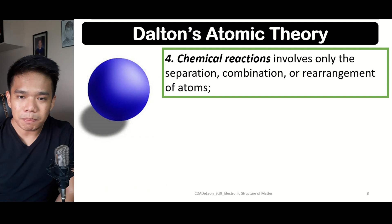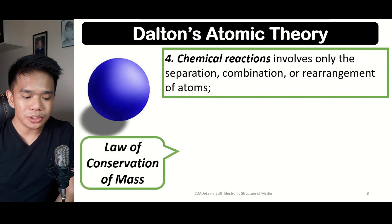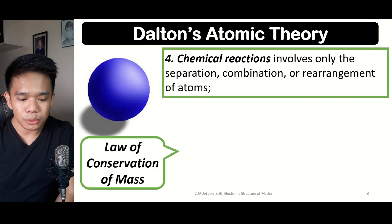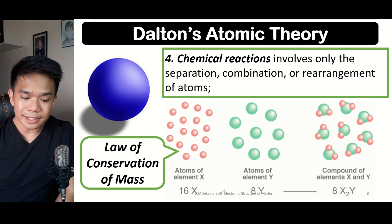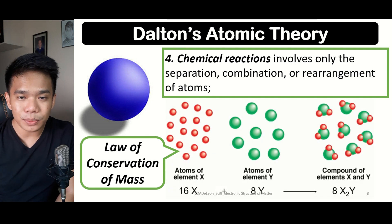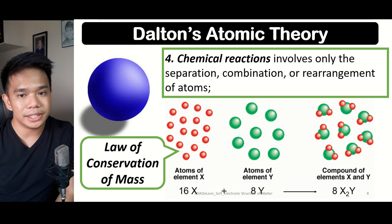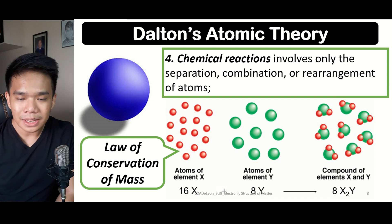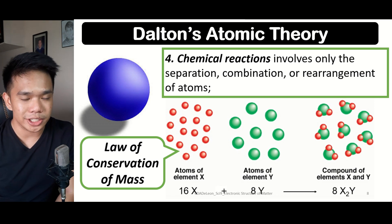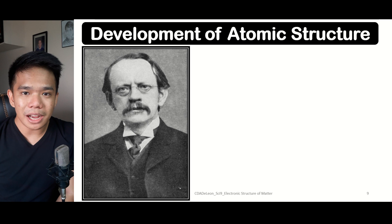The fourth postulate states that chemical reactions involve only the separation, combination, or rearrangement of atoms. This was also disproven due to the law of conservation of mass, which clearly states that the total mass — or total number of atoms — within a given reactant is equal to the number of atoms within a given product. This can be exemplified through a balanced chemical equation.